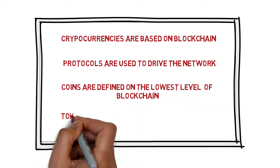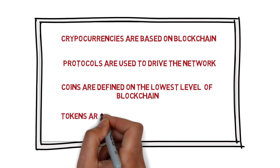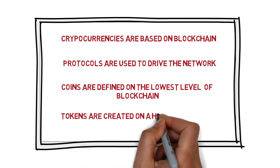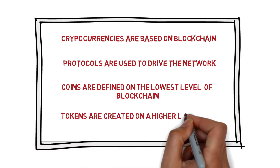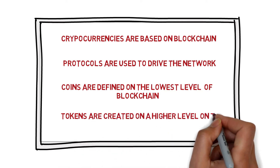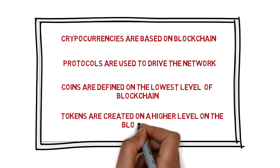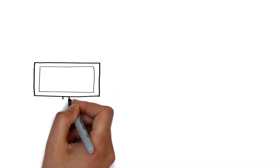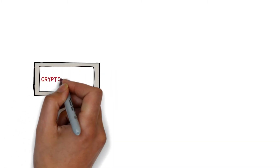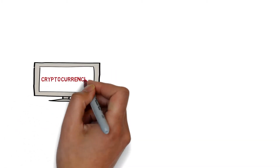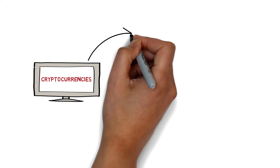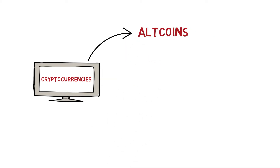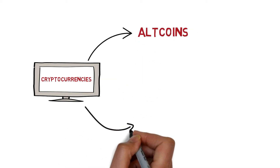We can build a higher level of digital assets, which are tokens, which are called smart contracts. Cryptocurrency space is categorized into two types: one is altcoins and the other is tokens.